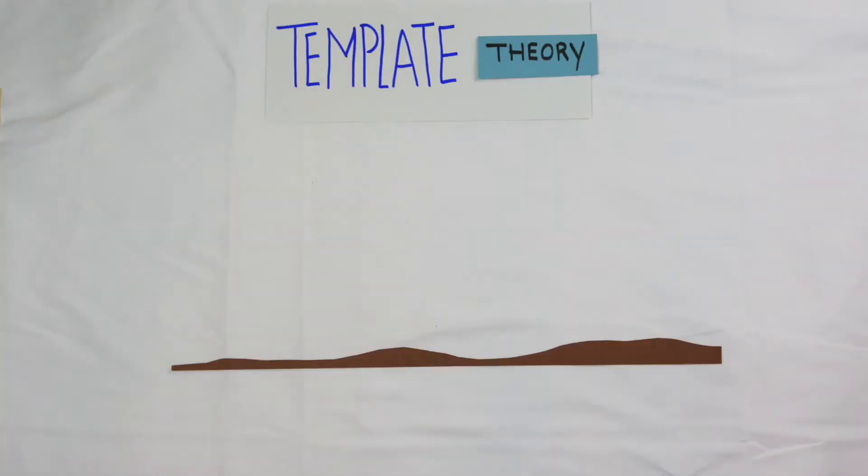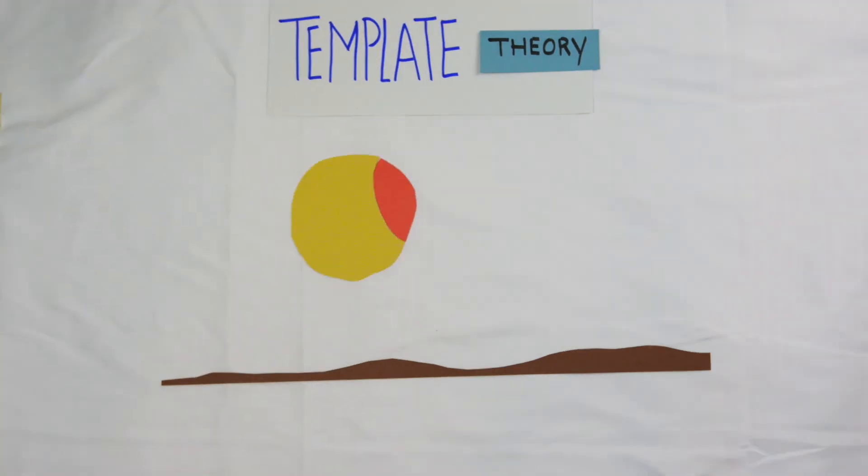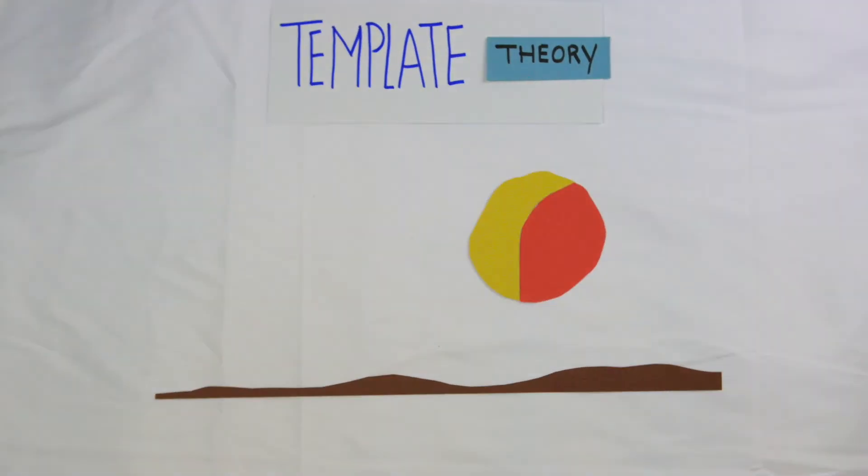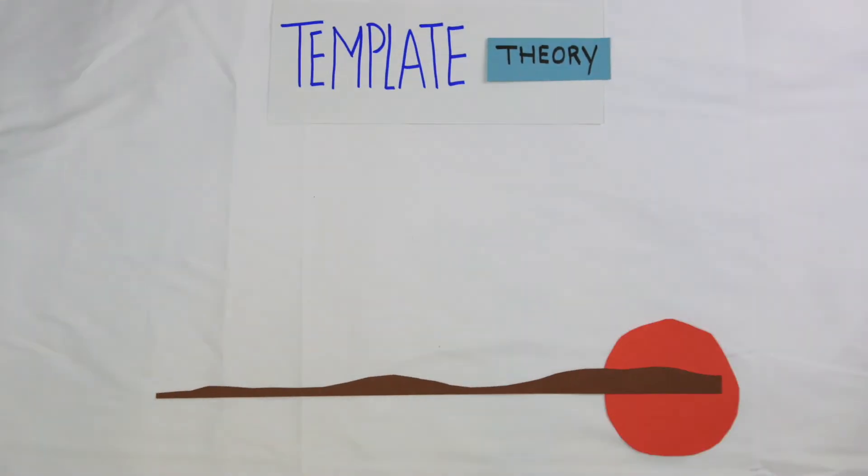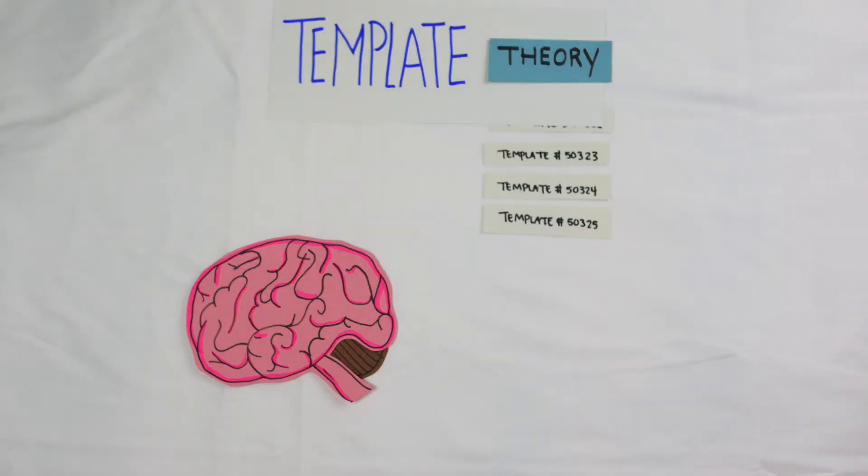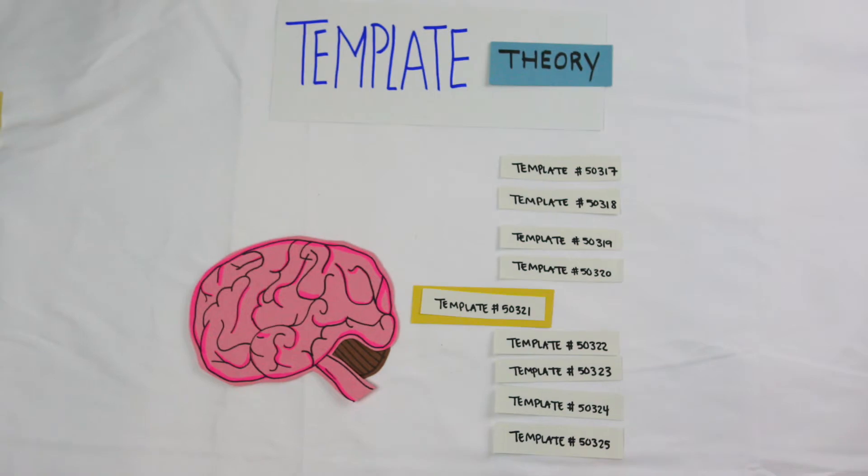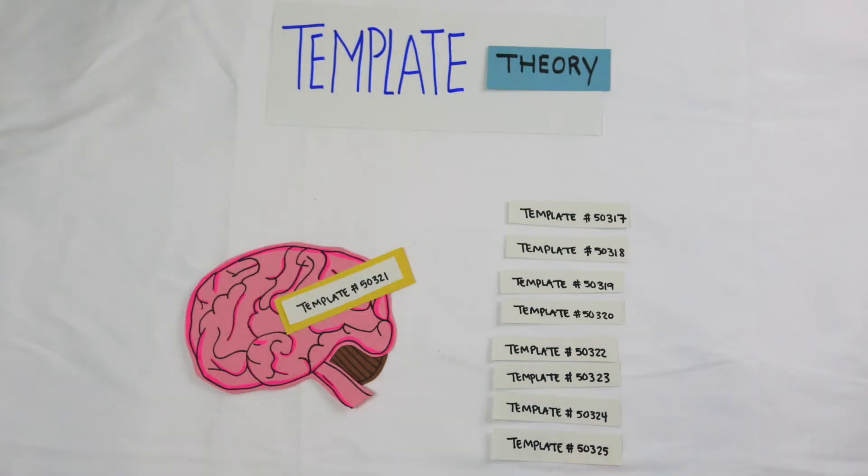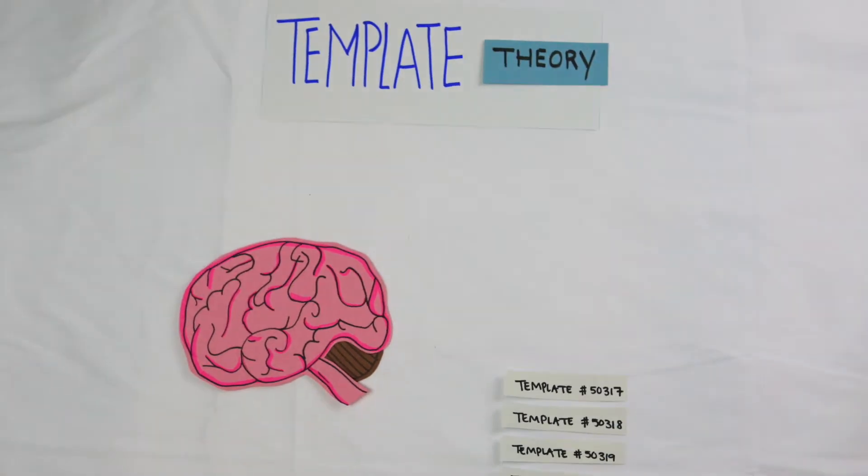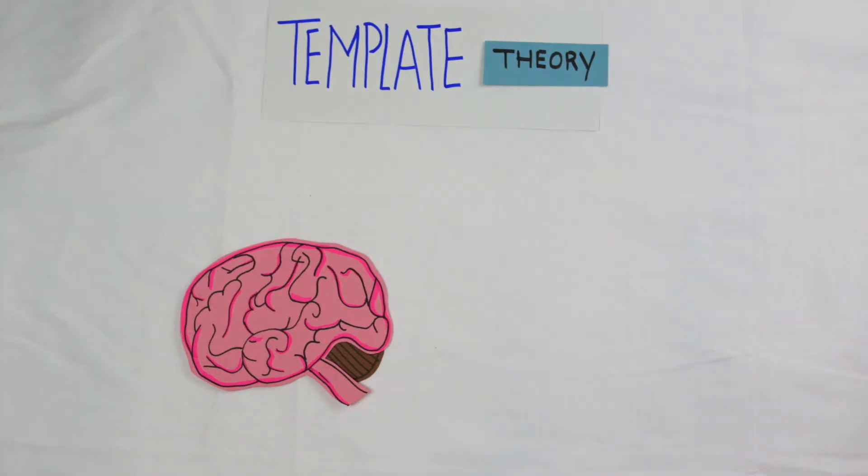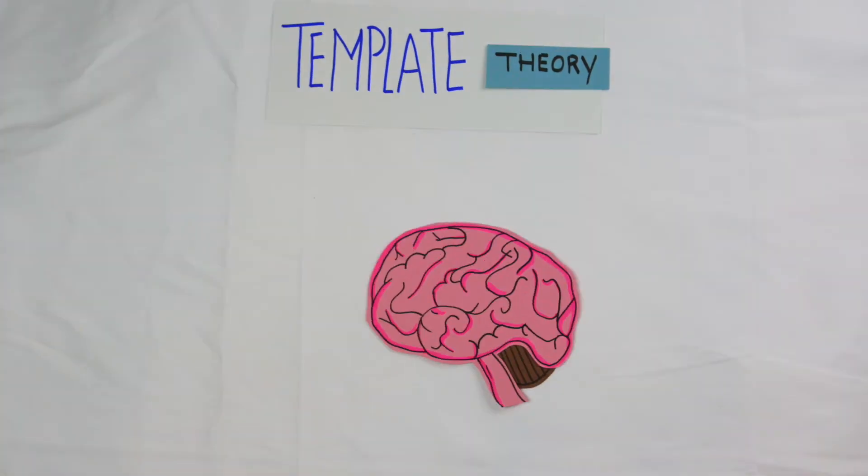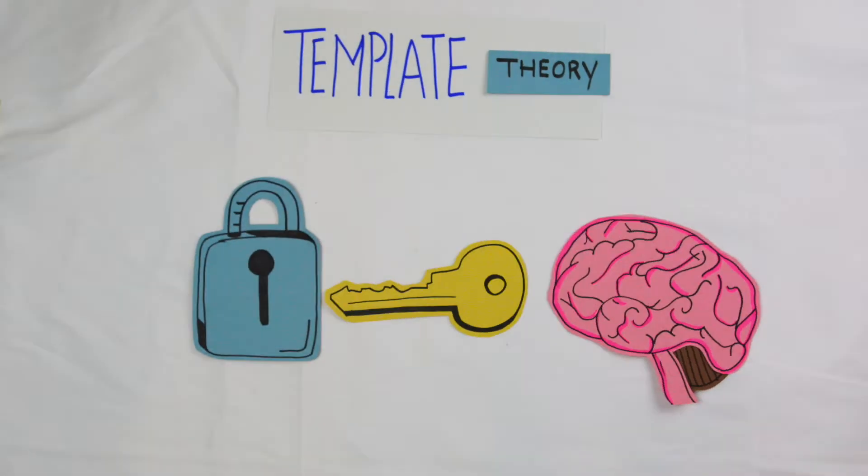Template theory is characterized by the notion that every possible visual experience you see, from sunrise to sunset, is already stored in your brain. Your brain is sorting through all the different templates that it holds to find the correct match. This can be expressed through the idea of a lock and key method, with each sensory experience having a perfect match.